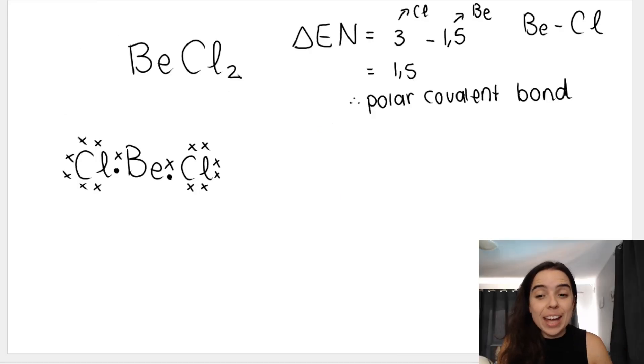If you take a look at BeCl2, beryllium chloride, you can see that I worked out the difference in electronegativity for the BeCl bond. 3 minus 1.5, chlorine is 3 and Be, beryllium, is 1.5. It gives me 1.5, which is a polar covalent bond.